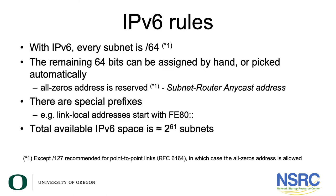What are the IPv6 rules? With IPv6, every subnet is a /64, with the exception of /127 which is used for point-to-point links. The remaining 64 bits can be assigned by hand or picked automatically. Remember, the all-zero address is reserved — just as in IPv4 it was reserved for network addresses, in IPv6 it's reserved for subnet and anycast addresses, except in /127 point-to-point links which only have two IP addresses.